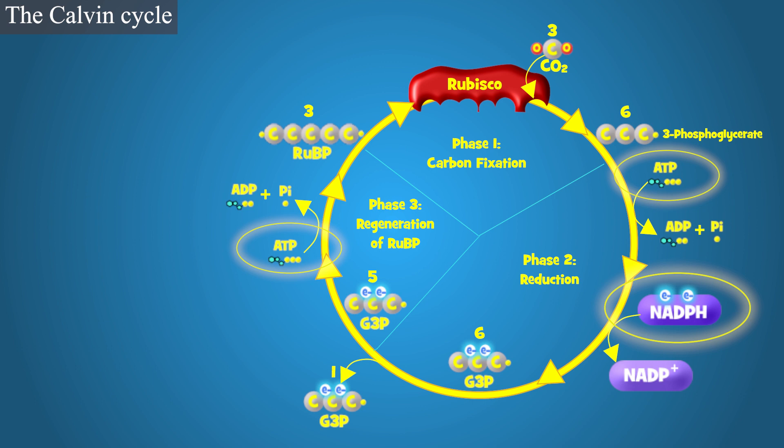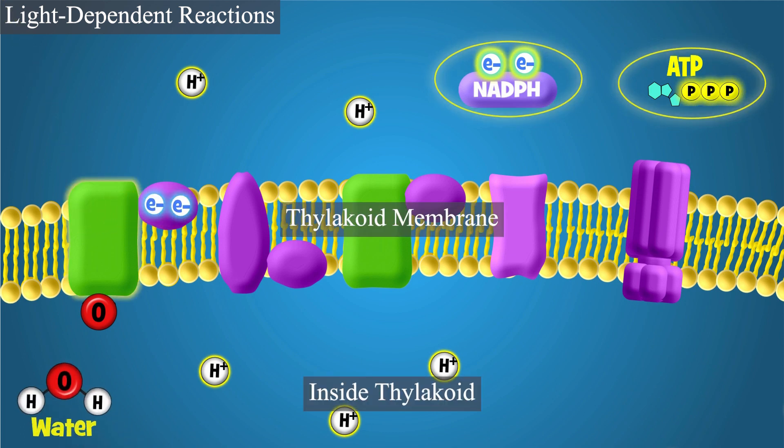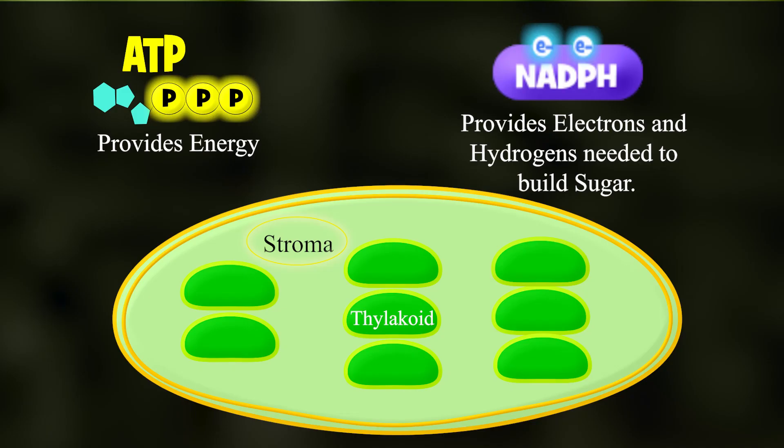Both ATP and NADPH were made during the light reactions at the thylakoids. The Calvin Cycle takes place in the fluids surrounding the thylakoids, known as the stroma. ATP provides the energy and NADPH provides the electrons and hydrogens that are needed to reduce carbon dioxide to build sugars in the Calvin Cycle.